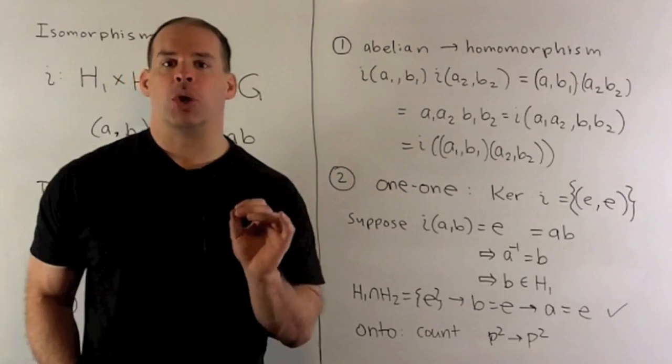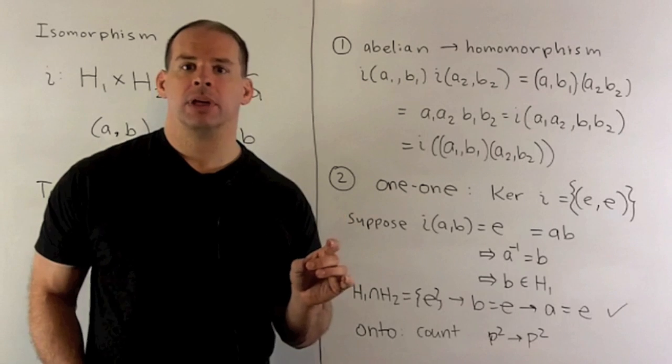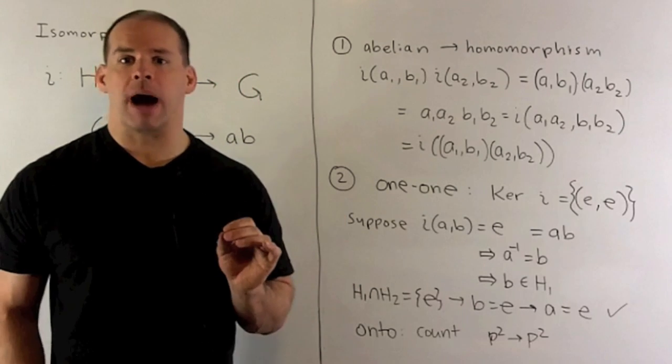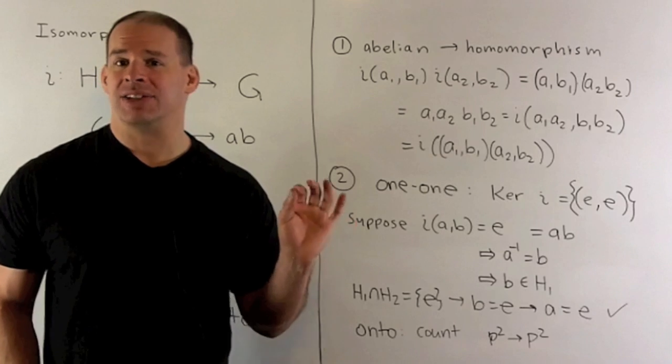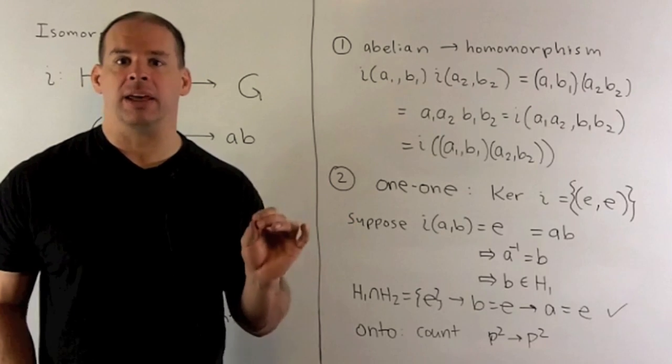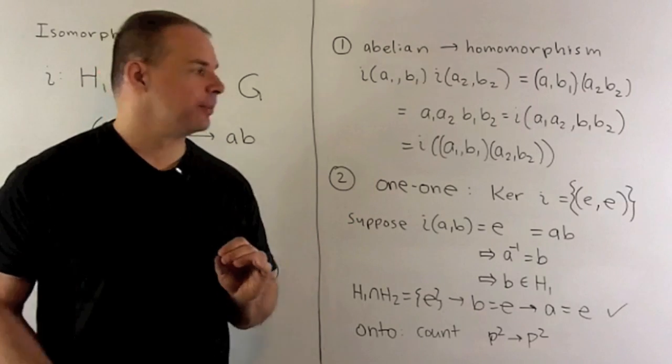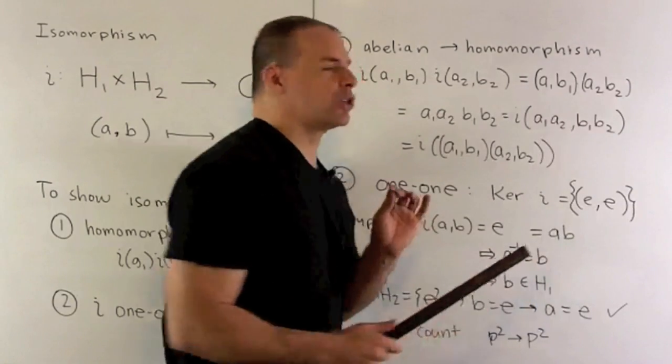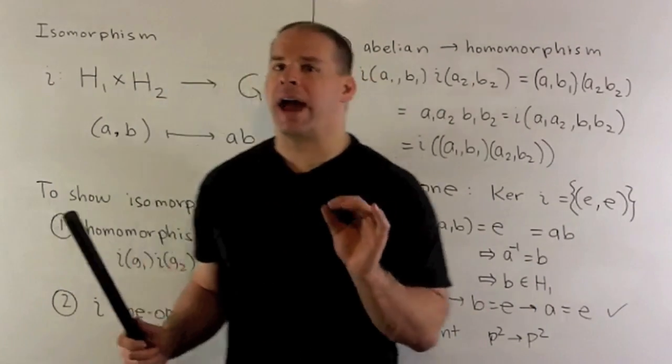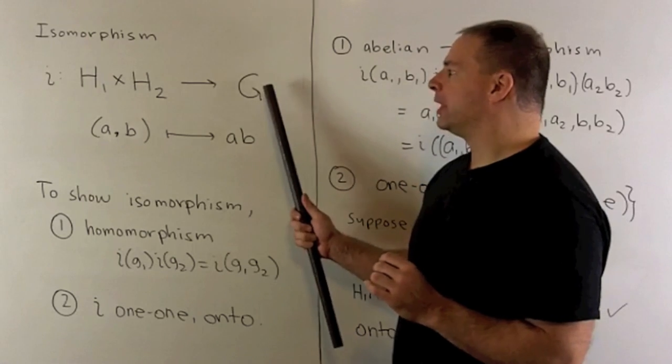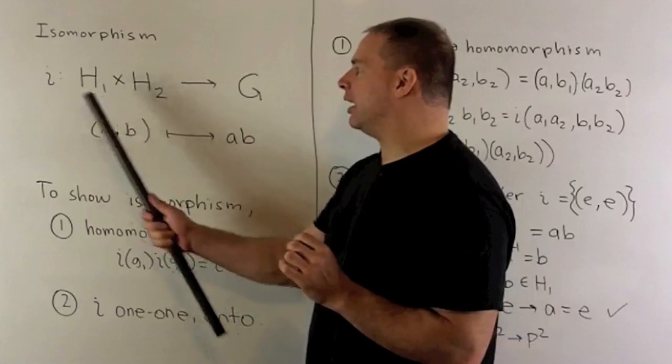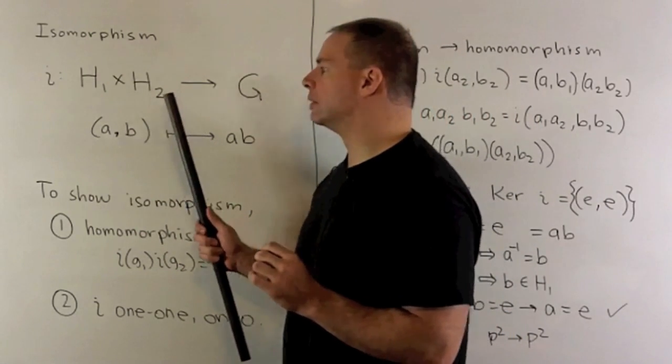What's left? I need to show one-to-one and onto. Since we have the homomorphism property to show one-to-one, I just need to show that the kernel of i is equal to (e, e), where e is the identity in G. So what we're trying to show here, the only way I can wind up landing on the identity element in G is if we start with (e, e) on this side.